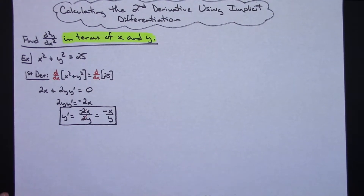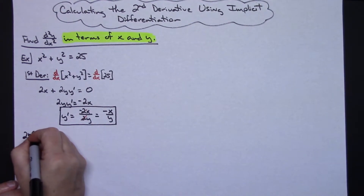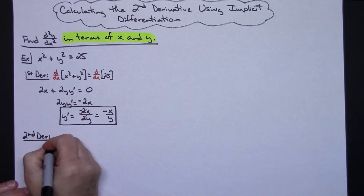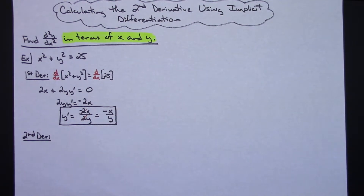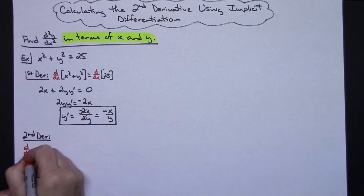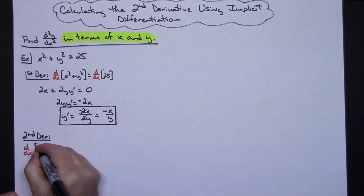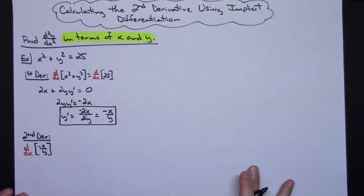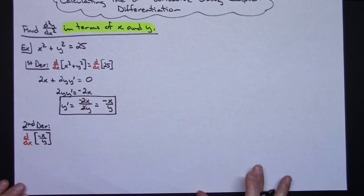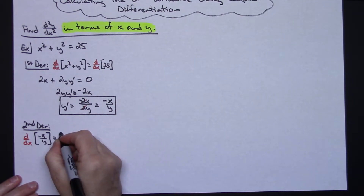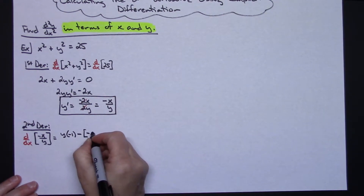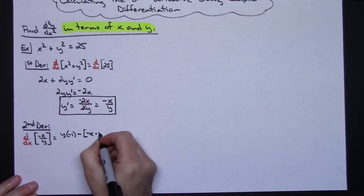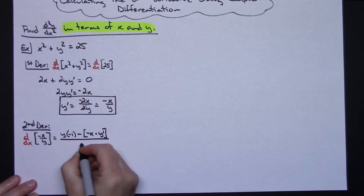Now we're going to go to the second derivative. Again I'm going to have implicit differentiation, calculating d/dx of negative x over y. This is going to be a quotient rule. So we've got the bottom times the derivative of the top, minus the top which is negative x times the derivative of the bottom which is going to be y', all over y².